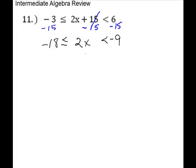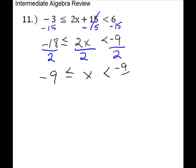Division is where you have to watch out — if you divide by a negative, your symbols will flip. But you don't need to divide by a negative here; your coefficient is positive, so your symbols are not going to flip. You're going to divide by 2 all the way across. This gives us negative 9 less than or equal to x, which is less than negative 9 halves.